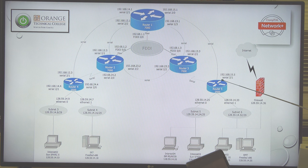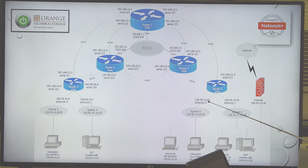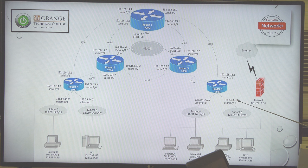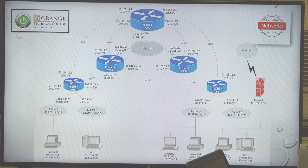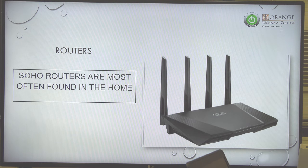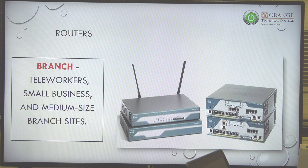Routers are always between subnets. Anytime you have a different subnet, you must place a router between them — for example, a 28.59.14.25 subnet and a different subnet require a router in between. Always recognize the symbols. Anytime you have a subnet you must bring in a router. Home routers are the most common use we find in the home.